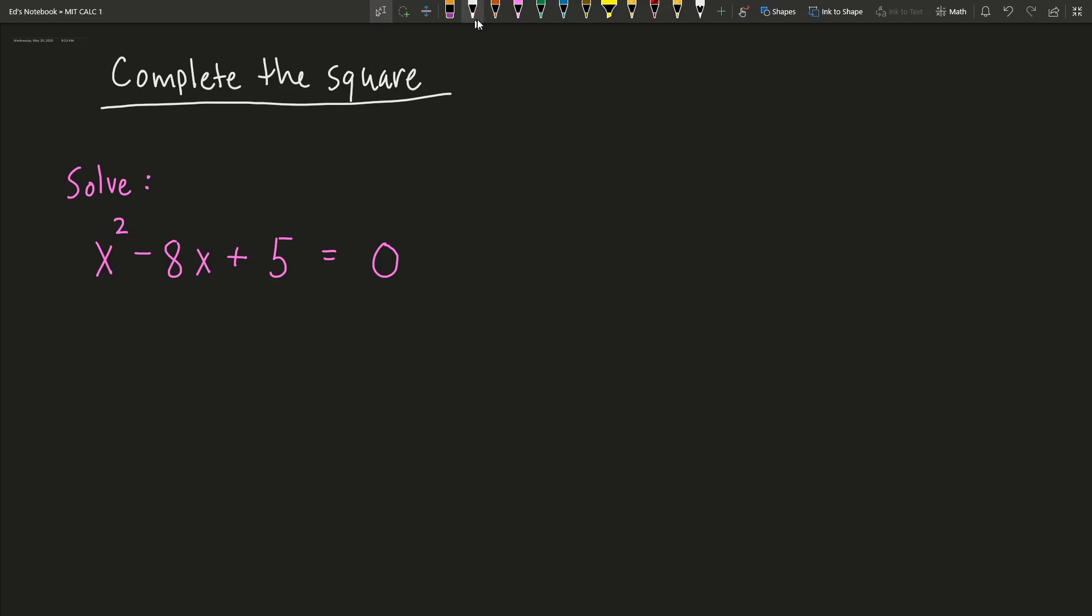And you can take a moment, pause the video to see if you can factor this. I'm going to assume you've done that. If you look, there's going to be no way to write the sum of the factors of 5 so that they add up to -8. So this is not going to be factorable.